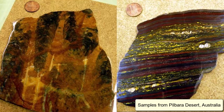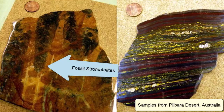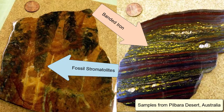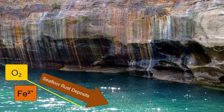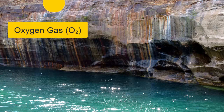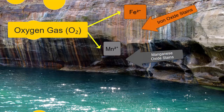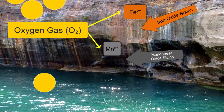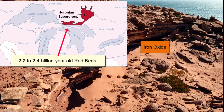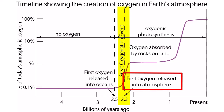Two samples from the Pilbara Desert, Australia illustrate this: on the left, small fossilized stromatolites — the oxygen producers — and next to it, the banded iron. Once the majority of the dissolved iron in the oceans was removed through iron oxide precipitation, oxygen was free to mix through the oceans and bubble up into the atmosphere, where it became available for the oxidation of atmospheric gases and dissolved metals in weathering surface rocks, rivers, and lakes. The oldest evidence of oxygen accumulating in the atmosphere comes from red beds on the north shore of Lake Huron, Ontario, Canada, dated between 2.2 and 2.4 billion years old. We call this period, about 2.3 billion years ago, when oxygen gas began to accumulate in the atmosphere for the first time in amounts as large as 1% of current values, the Great Oxygenation Event.